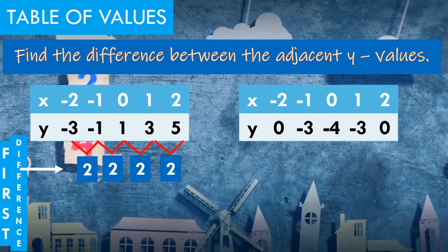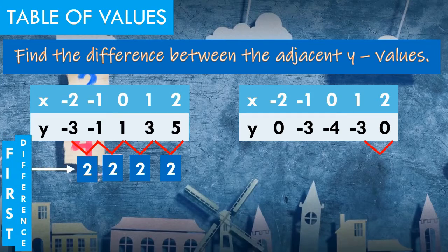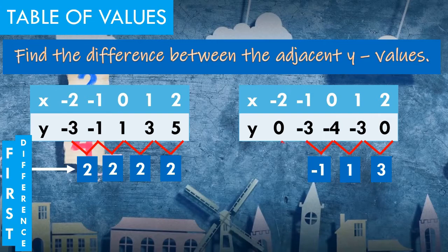As you can see, the first differences are all the same. Now let us proceed to the second table of values. We are going to do the same process, subtracting from right going to the left. So 0 minus negative 3 is 3, negative 3 minus negative 4 is 1, negative 4 minus negative 3 is negative 1, and negative 3 minus 0 is negative 3.